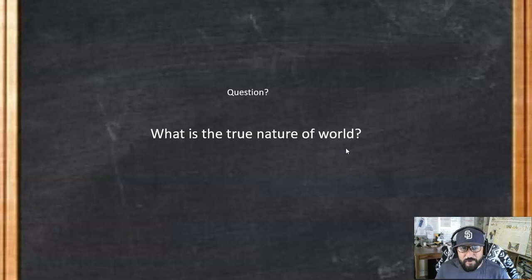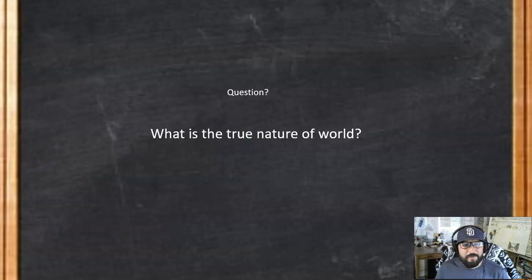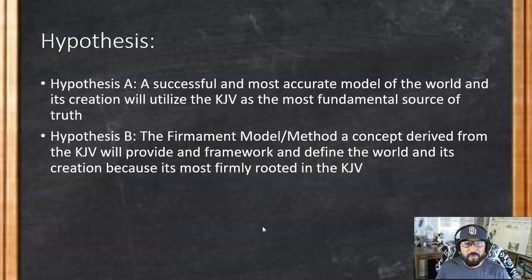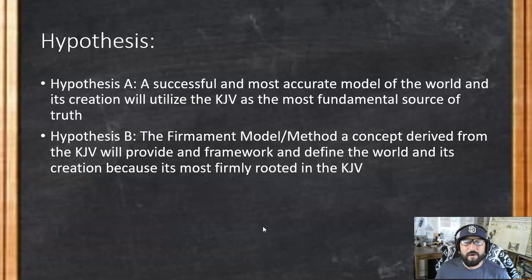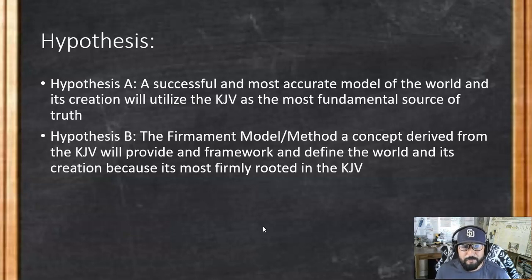So the question: what is the true nature of the world? We're going to start with Hypothesis A and Hypothesis B. Hypothesis A states that a successful, most accurate model of the world and its creation will utilize the KJV — the King James Version — as the most fundamental source of truth. And Hypothesis B states that the Firmament Model method, a concept derived from the KJV, will provide a framework and define the world and its creation because it's most firmly rooted in the KJV.